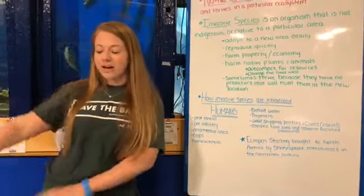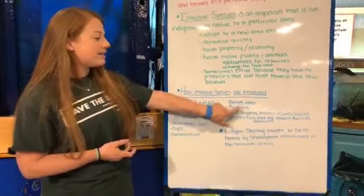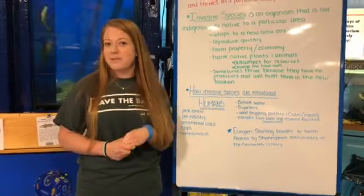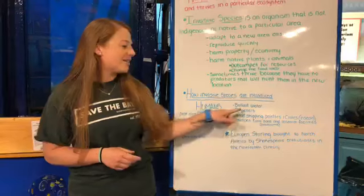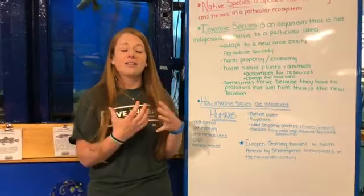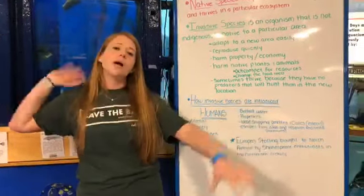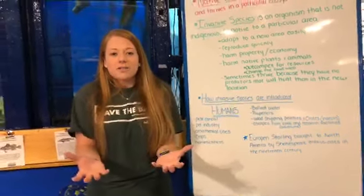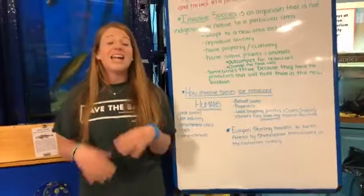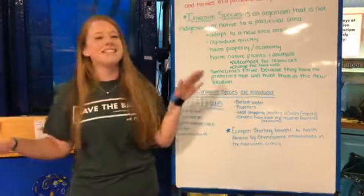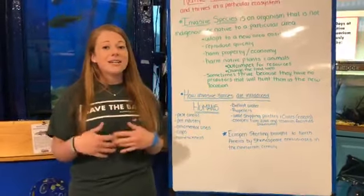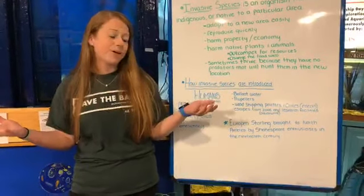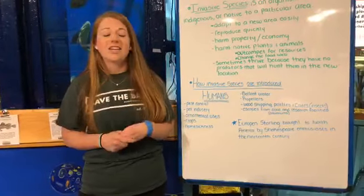One introduction pathway I want to touch on before we move to specific Rhode Island species is ballast water. If you think of a huge cargo ship coming from Europe or Asia, before it leaves its harbor it fills part of the ship with water — called ballast water — to keep the ship balanced on its long ocean journey. When it arrives at its destination and unloads its goods, it no longer needs that water and releases it into the new harbor. A lot of the animals we're going to talk about today could have been in that ballast water.